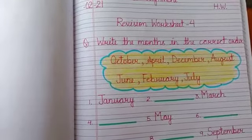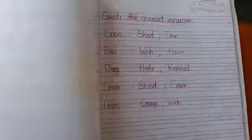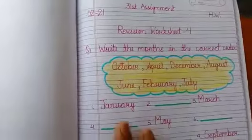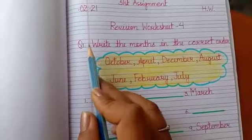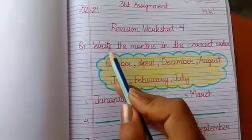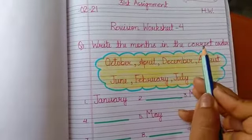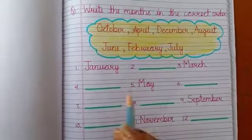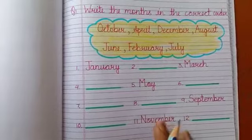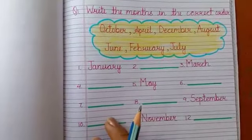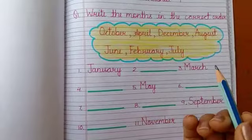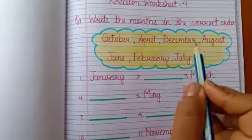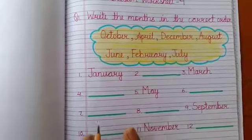Our first question is: write the months in the correct order. I have given you the months' names here and some of the months are missing, so you have to write them in the correct order. I have given you the options here as well.